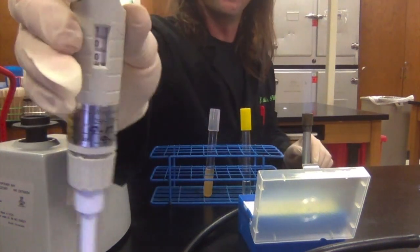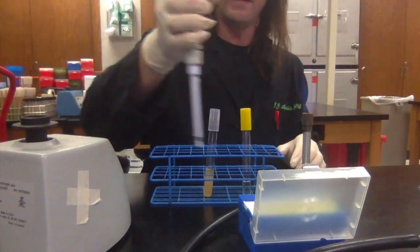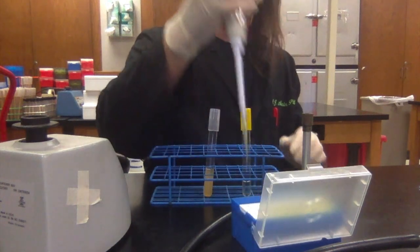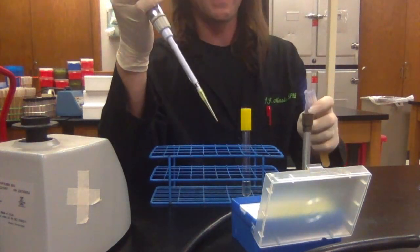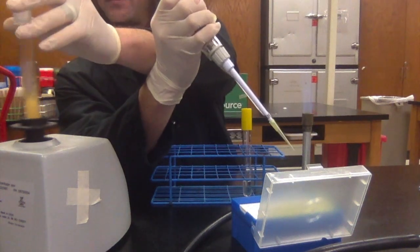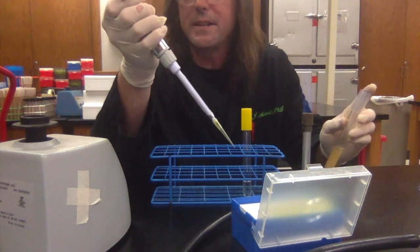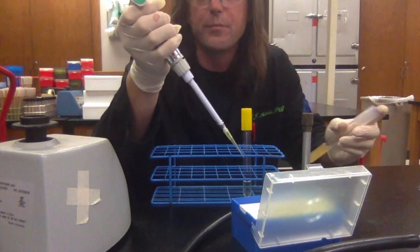The first thing I'm going to do is set the pipetter to 100 microliters. Then I'm going to get myself a pipette tip. I'm going to take my culture and briefly vortex it to make sure that it's re-suspended, because a lot of times overnight bacteria will settle out at the bottom of the tube.